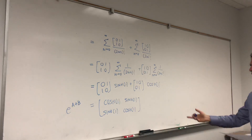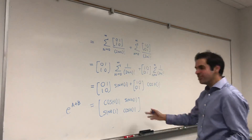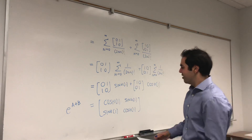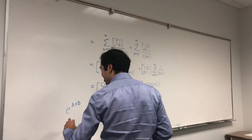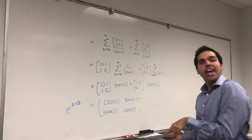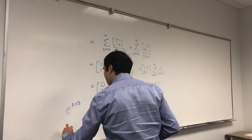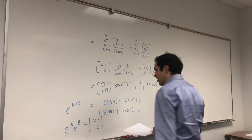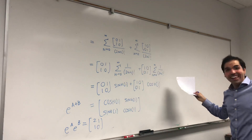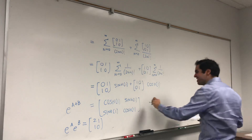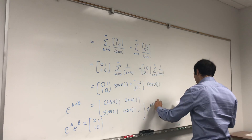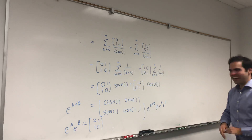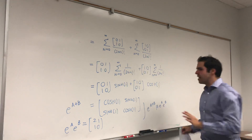Interestingly, it's almost like the rotation matrix but with a plus sign and with cosh and sinh. This is e to the A+B. I would like to remind you that e to the A times e to the B was [[2,1],[1,0]], which is not the same thing. So in this case, e to the A+B is not equal to e to the A times e to the B. Matrices are very weird.